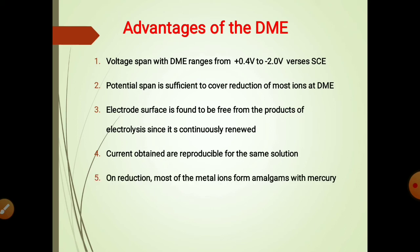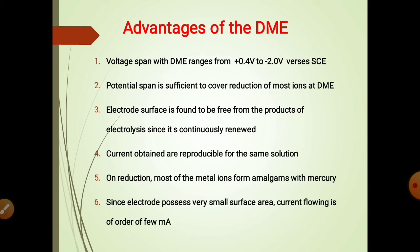The next advantage is that most metal ions form amalgams with mercury on reduction. Also, as the electrode possesses a very small surface area, the current flowing is of an order of a few microamperes. This makes several replicate determinations for the same solution possible without changing the concentration of the electroactive species. Due to the continuous renewal of the electrode surface, the simultaneous determination of several metal ions is also possible. These are the few advantages of a dropping mercury electrode.